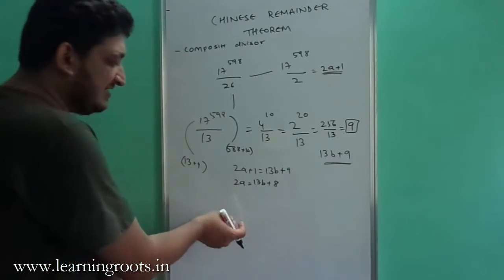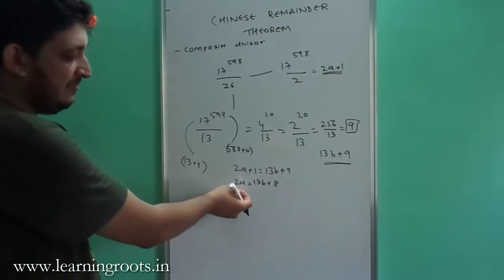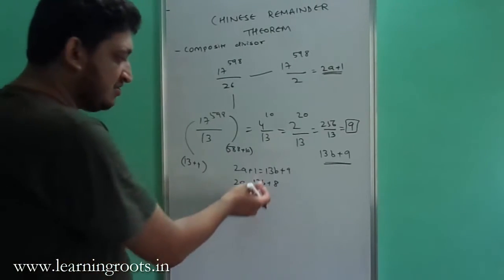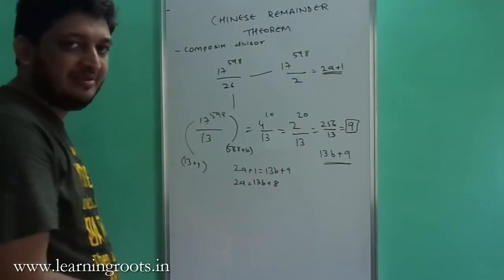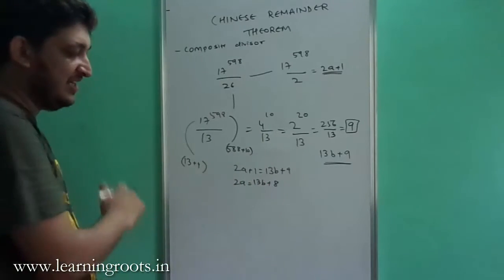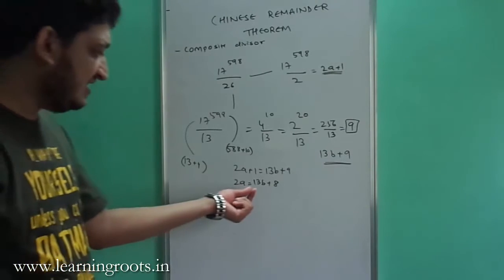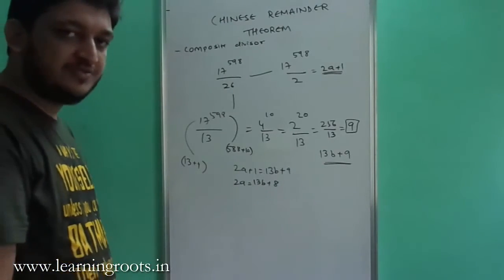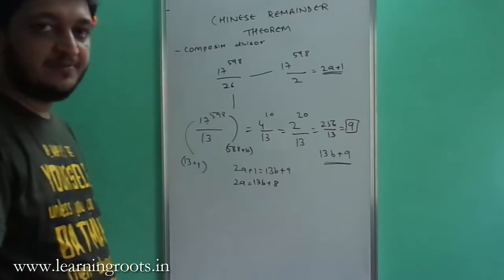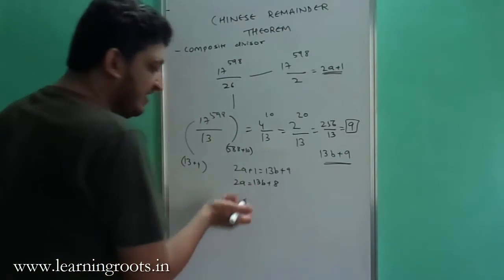What we can do here is we know that 8 when divided by 2 will give remainder of 0. So 13B when divided by 2 should also give remainder of 0 for this RHS to satisfy the integral value of 8. So if 8 is already giving you a value of 0, then we can simply take B to be 0 as well. If we take B as 0, we get A as 4.